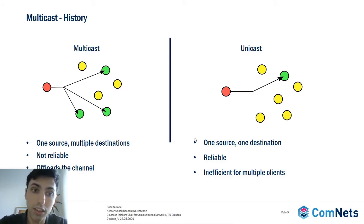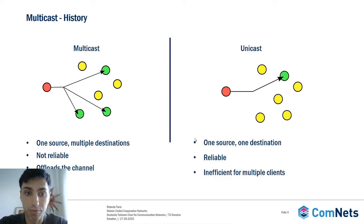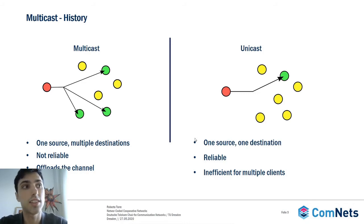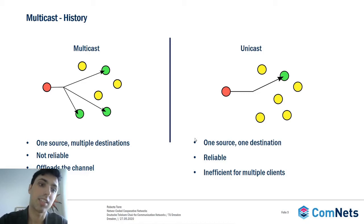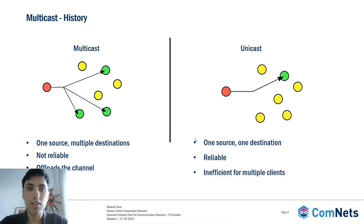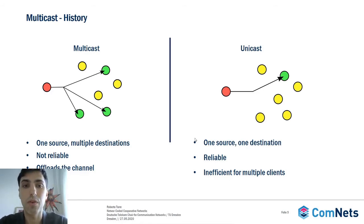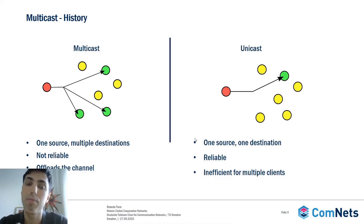In multicast we have the same red dot but we are disseminating the same data to three different people. However, the problem is that this approach is not as reliable — it is more prone to errors than unicast. I'm not saying it is unreliable, just that it is less reliable than unicast. The good thing is that we are not using as many channel resources; for one single stream we are reaching many users.